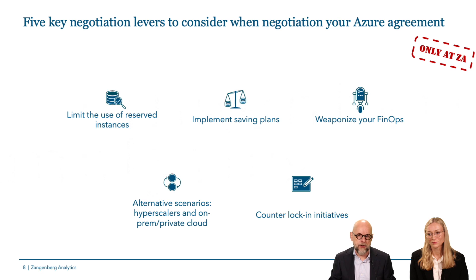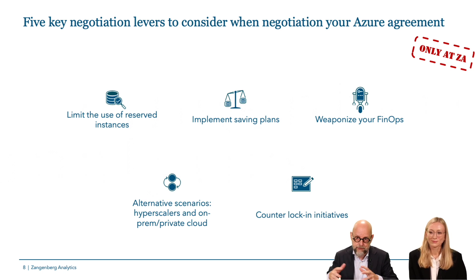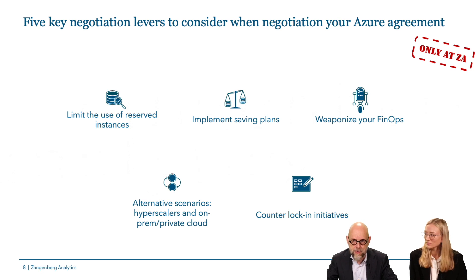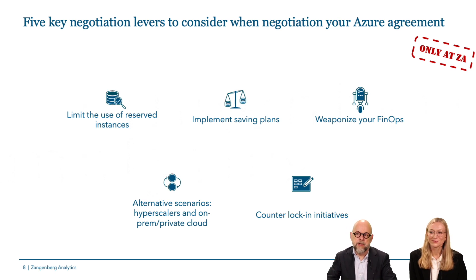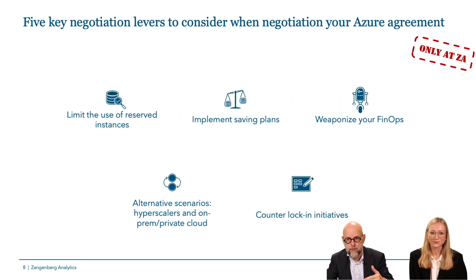Use savings plans and weaponize your FinOps. FinOps is your most important process if you have cloud spend above five million Danish kroner a year. Always consider alternative scenarios — shifting between hyperscalers or moving things out of the cloud back to on-prem or private cloud. Having those scenarios ready is a powerful negotiation lever, demonstrating you can actually move out of Azure.